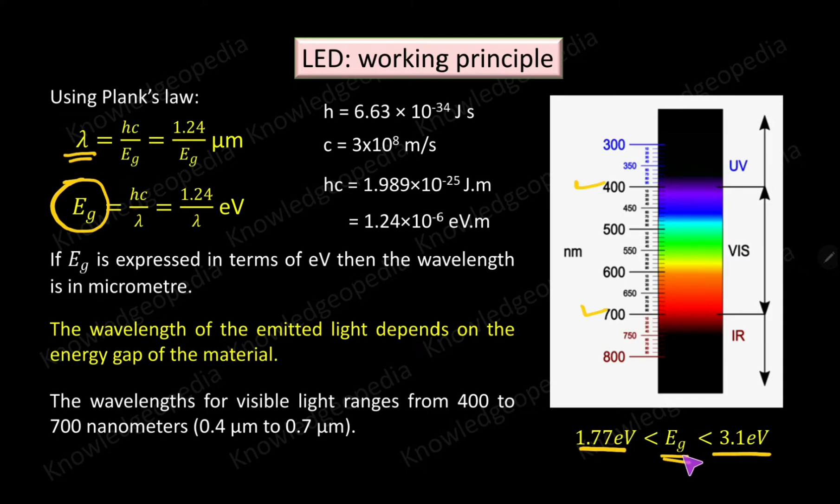This energy gap also decides the barrier potential of the diode, and hence if energy gap is very high then the barrier potential will also be high. That means the barrier potential of red LED is less as compared to the barrier potential of violet LED. This concept will be used while we discuss the V-I characteristics of an LED.